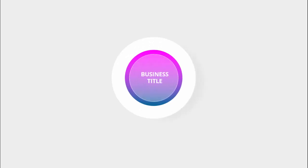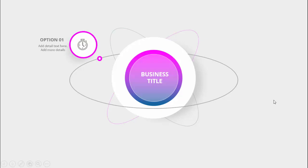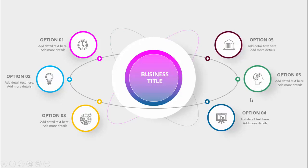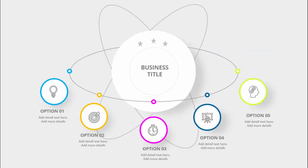In today's tutorial I'm going to show you how to create a six circular options infographic slide in PowerPoint. When I click, you can see the first circle comes with the business title, then option one with a different outline color, then option two, option three, option four, option five, and option six. I've also created one more slide with five options at the bottom, so depending on your requirement you can choose the slide.